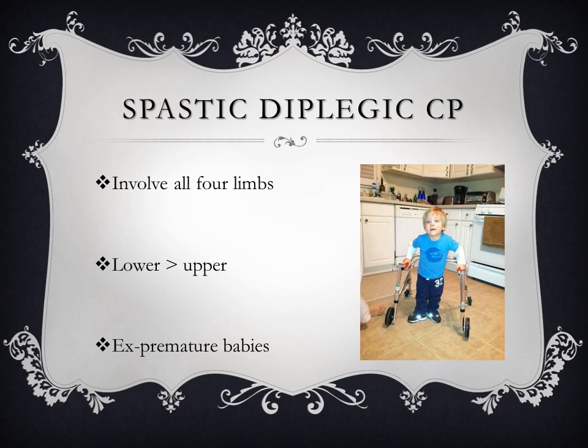In spastic diplegic cerebral palsy, all four limbs are involved; however, the lower limbs are more affected than the upper limbs. This type of cerebral palsy is commonly seen in ex-premature babies.